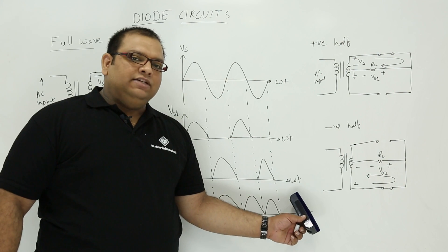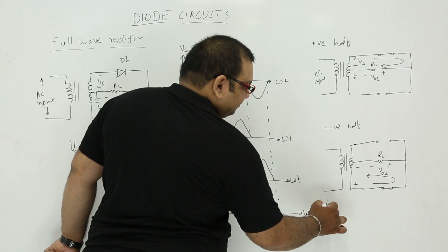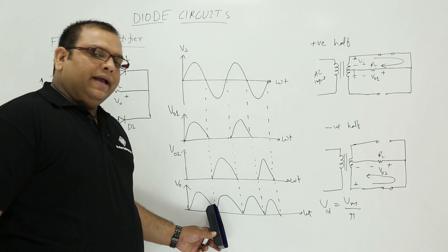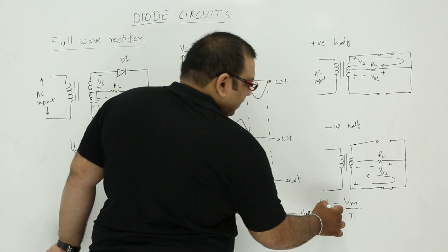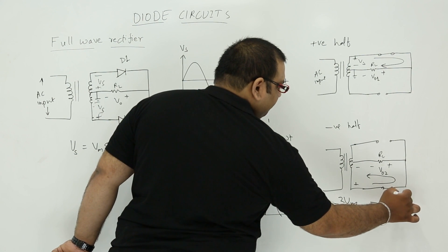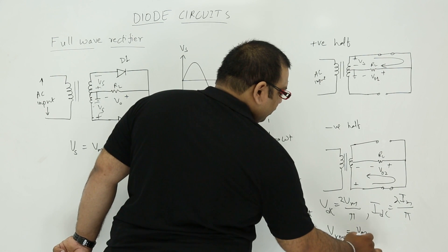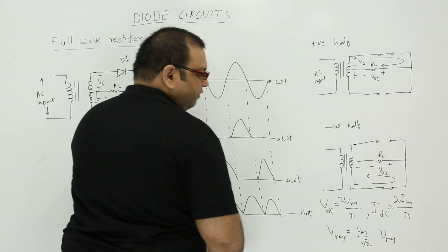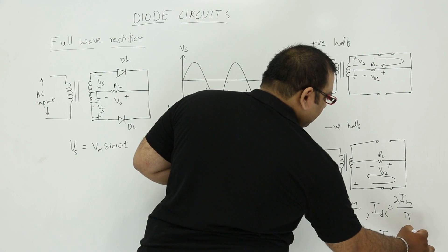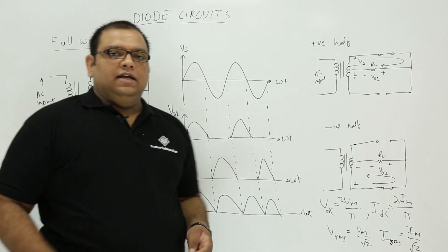This DC voltage is more than that of the half wave rectifier. In the half wave rectifier, Vdc equals Vm divided by pi. But in the full wave rectifier, since both halves contribute, Vdc equals 2Vm divided by pi, and Idc equals 2Im divided by pi. The RMS voltage is Vm divided by root 2, and the RMS current I_rms is also Im divided by root 2. These are the key current and voltage values for the full wave rectifier.